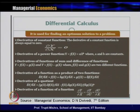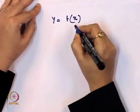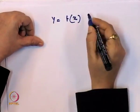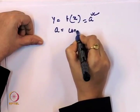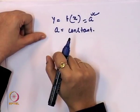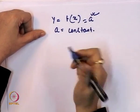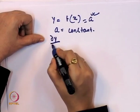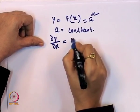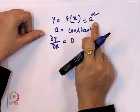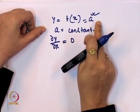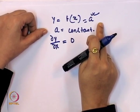We start with the constant function. The functional form is y = f(x) = a, where a is a constant. If we take the first order derivative with respect to x, it comes to 0. Why? Because the function is in the form of a constant, and the derivative of a constant with respect to x is always 0.